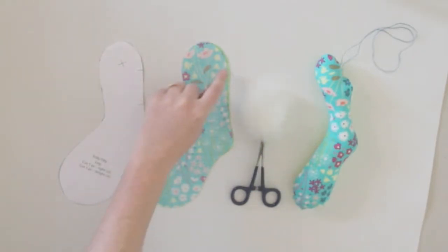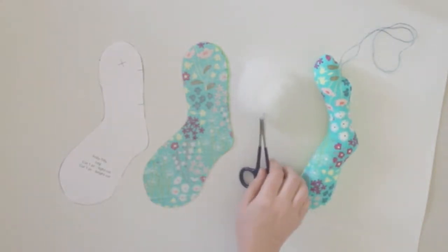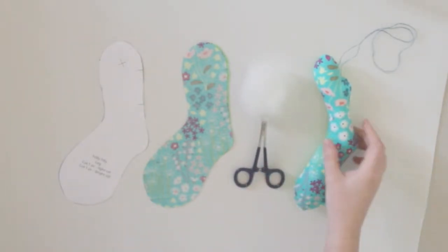Once you have sewn that 5mm seam allowance you can then turn the legs through and stuff with your hobby fill. If you have got your hemostat that will make the job easier and then the leg will look like this.